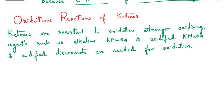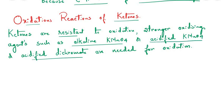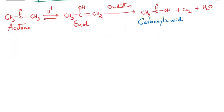Ketones are resistant towards oxidation, and we require stronger oxidizing agents such as alkaline KMnO4, acidified KMnO4, or acidified dichromate for oxidation. Acetone, when initially acidified, gives an enol intermediate, and this enol intermediate on oxidation gives a carboxylic acid — ethanoic acid. One must remember that one carbon atom from the reactant molecule is lost in the form of CO2; ketones on oxidation will have one carbon atom less than the starting reactant.